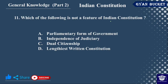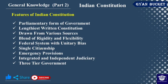Which of the following is NOT a feature of the Indian Constitution? The parliamentary form of government is a feature; independence of judiciary is a feature; but dual citizenship is NOT a feature — India follows single citizenship. The correct answer is option C. The constitution is a large written constitution.